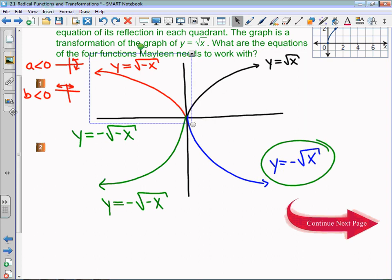Y equals the root of negative x for quadrant 2, y equals the negative root of negative x for quadrant 3, and y equals the negative root of x for quadrant 4. Kind of an interesting question, just trying to reiterate how we reflect our functions using the a and b parameters.